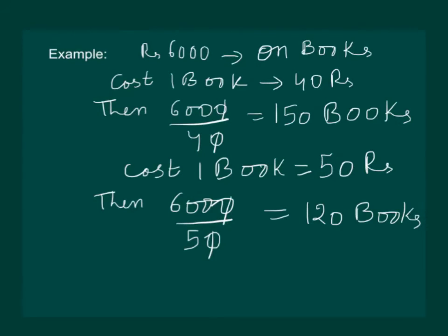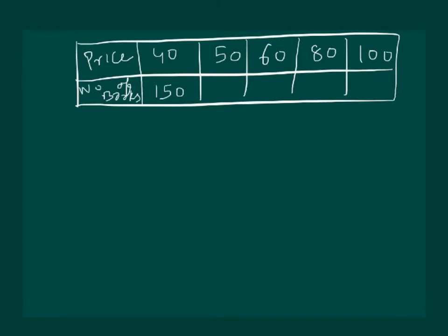So, now it's time to construct a table between price of the book and number of books. Let us change the price of the book and find out values for the number of books that we can purchase in Rs. 6000. It will come out to be 150, we have already calculated, 120.